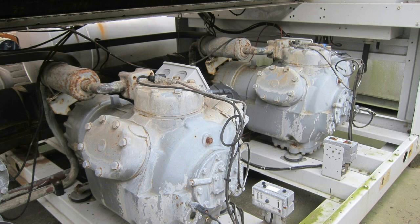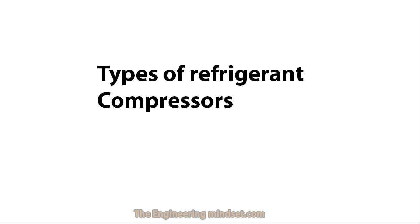Hey there guys, Paul here from TheEngineeringMindset.com. In this video we're going to be looking at the most common types of refrigerant compressors. We're going to review the four most common types: the centrifugal, the screw, the scroll, and the reciprocating. We'll look at real world examples of how these appear in plant rooms so you can spot them on site, and we'll also have a brief look at how each one works.